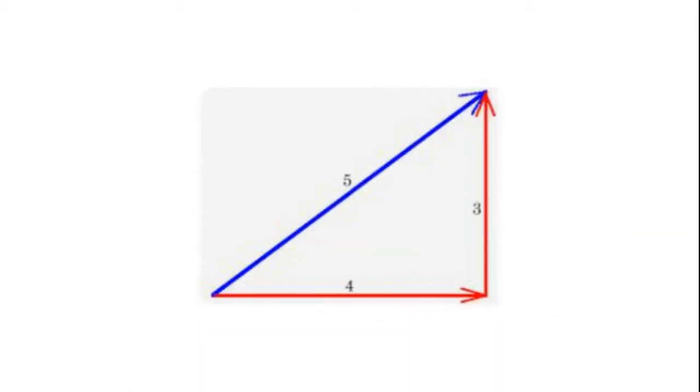Using the 3-4-5 method is a quick and practical way to ensure that corners are at right angles during construction, preventing inaccuracies that can accumulate and cause problems in the overall structure.